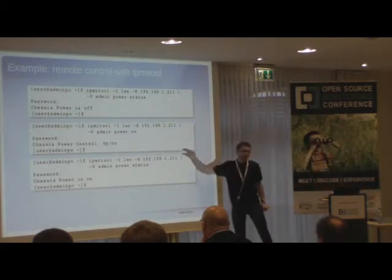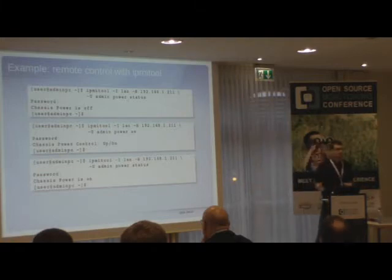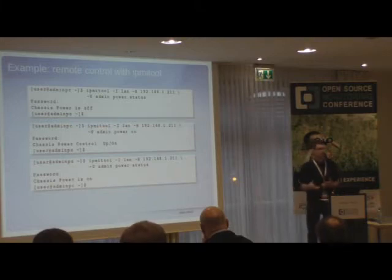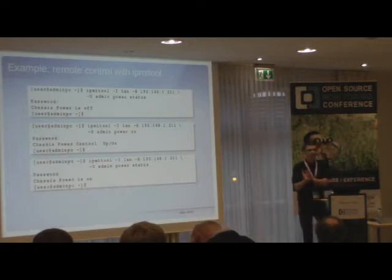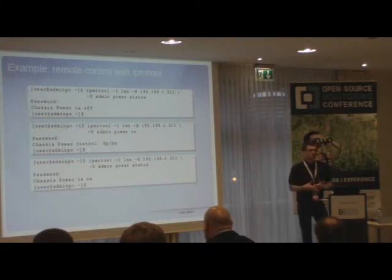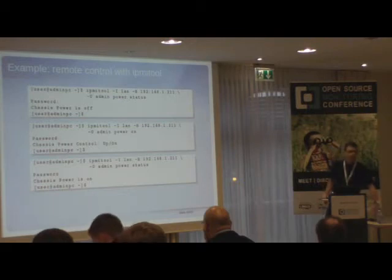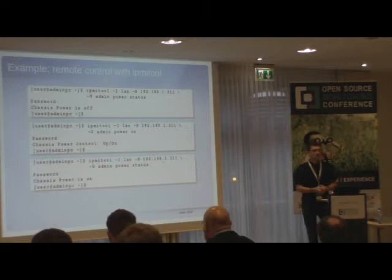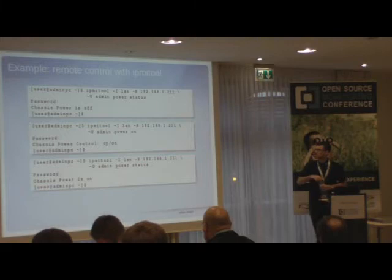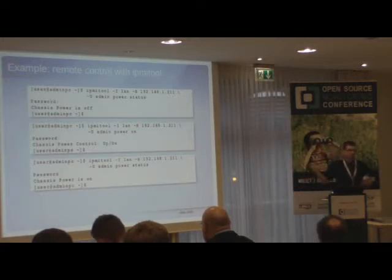The IP address for the BMC is unique and independent from the operating system. Depending on the server, you can use an individual dedicated NIC for it, or share the first or second onboard NIC. It depends on how many ports you have in your data center. If you have a dedicated hardware management LAN, use the dedicated port. If management is on the same network as production, you can use the same network interface as the OS but with a different MAC address. You could also use VLANs — there are many possibilities.